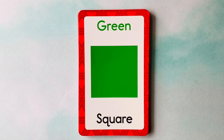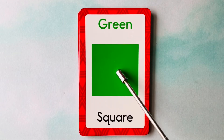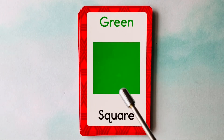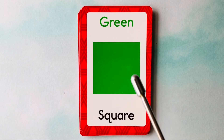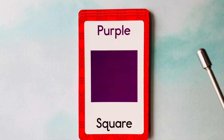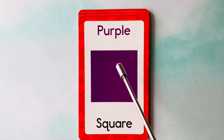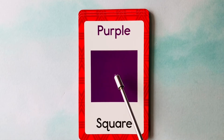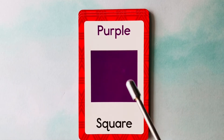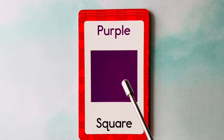Let's learn shapes and colors. This is a square. What color is this square? It's a green square. This is also a square. What color is this square? It's a purple square. This is a purple square.